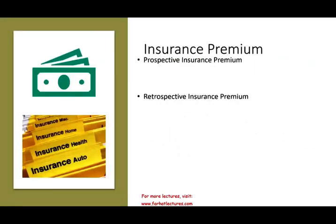The next topic in this chapter is insurance premium. We have to differentiate between two types, which is a bit unusual. Think about auto insurance — when do you pay? You pay at the beginning of the period. If you went through the whole year and paid at the end, you'd have no incentive to pay if you didn't get into any accident. So you always pay before — paying for insurance before is called a prospective insurance premium, meaning you pay it at the beginning of the period.